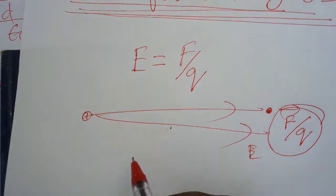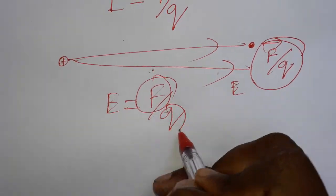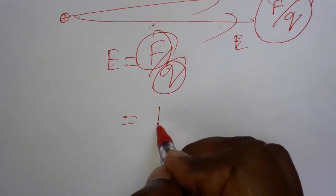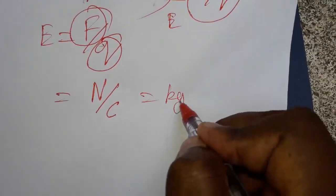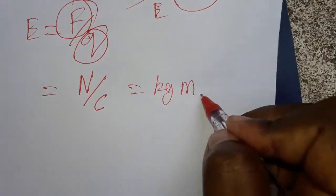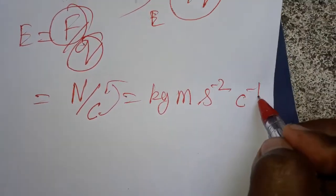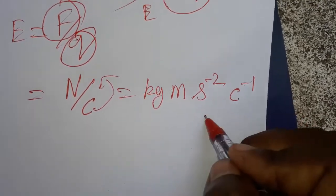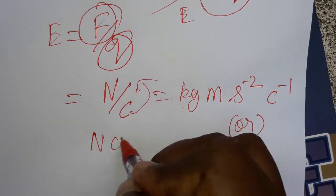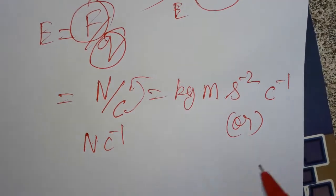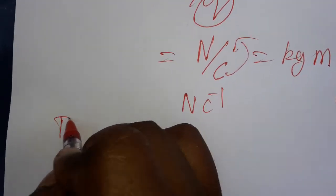Today we are going to find what is the SI unit of electric field intensity. Electric field is equal to force per unit charge. Force has a unit of Newton, charge has a unit of Coulombs, so it is Newtons per Coulombs. Newton is kg·meter·second⁻², and Coulombs is taken in the numerator as Coulombs inverse, so we can write it as Newton·Coulombs⁻¹.